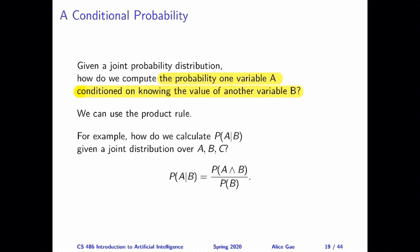Suppose we have a joint distribution over A, B, and C, and we want to calculate the probability of A given B. We can do this using the product rule: the probability of A given B is a fraction where the numerator is the joint probability of A and B, and the denominator is just the probability of B. This formula applies for the case when both A and B are true; you can derive similar formulas when one or both are false.